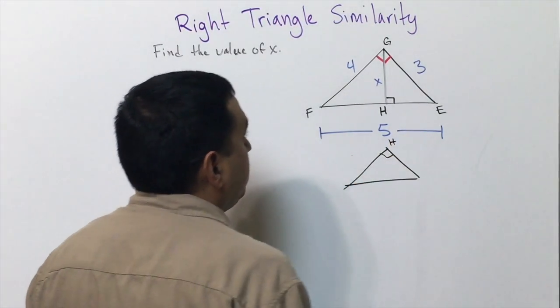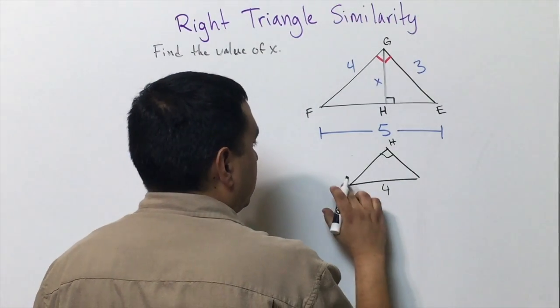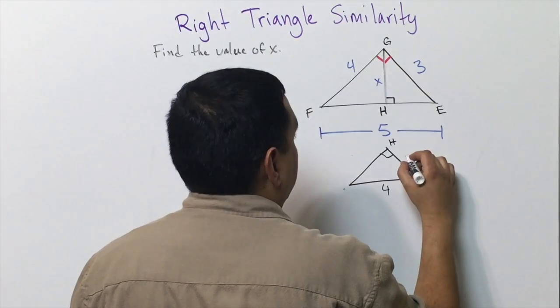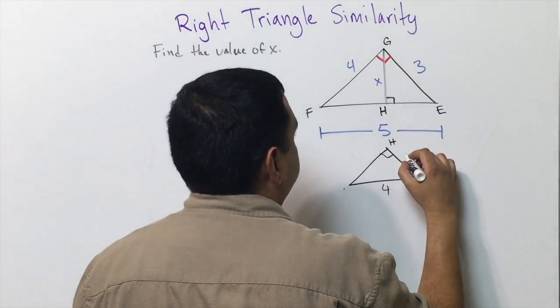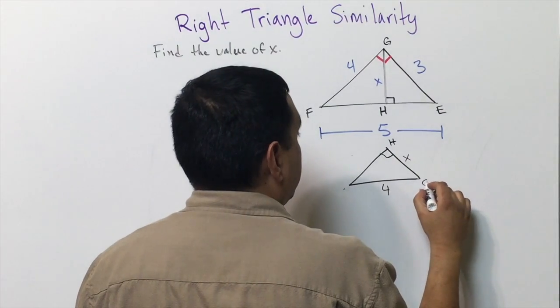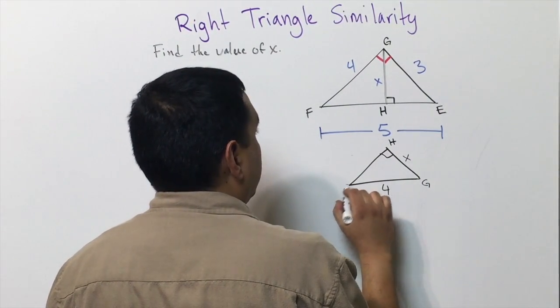I'll put H up here on top, so my 4 is going to go here and my x is going to go here. This would be G and this would be F if I flipped it from rotating it.